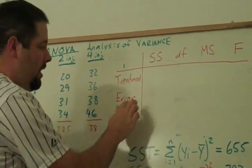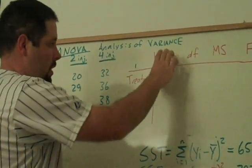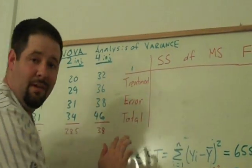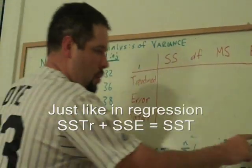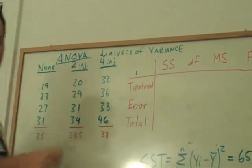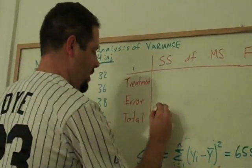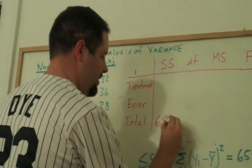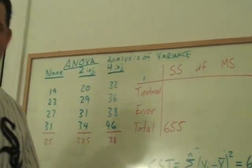The treatment plus the error variability in the sums of squares, that's going to equal our total variability. And so we can see that when we actually go ahead and figure out all the math with our sample here, our total variability in this problem is 655.